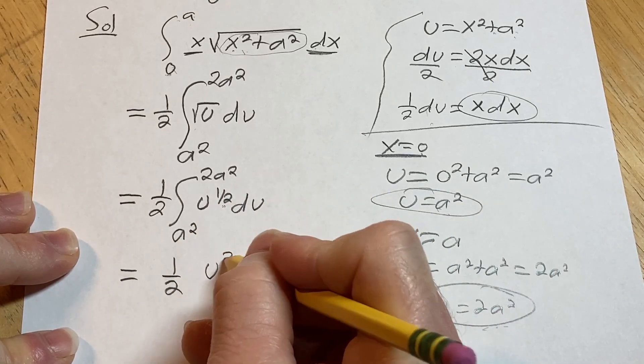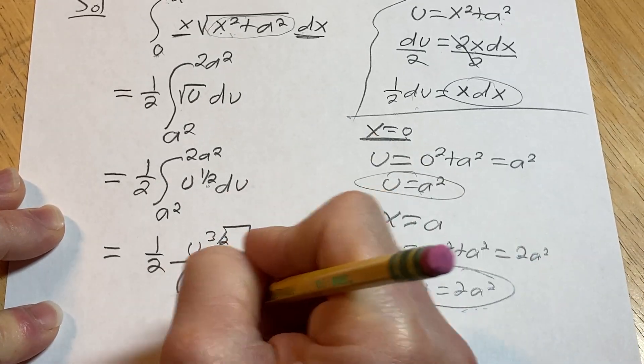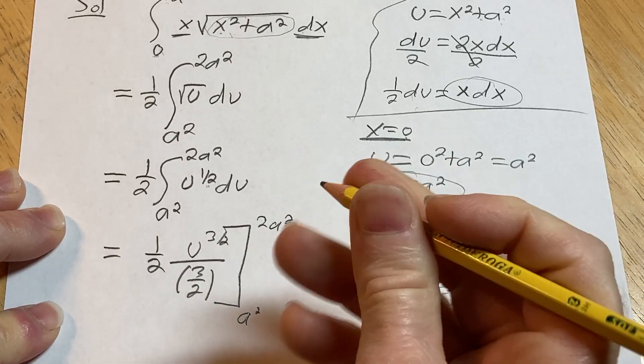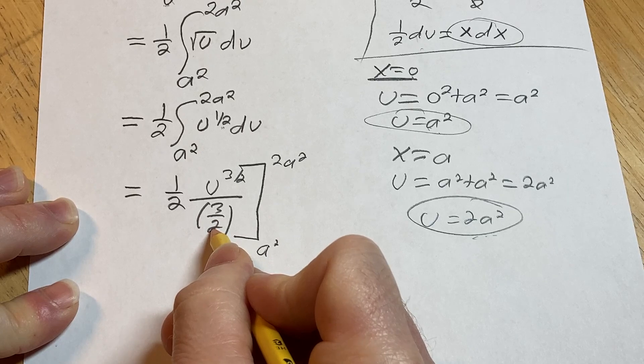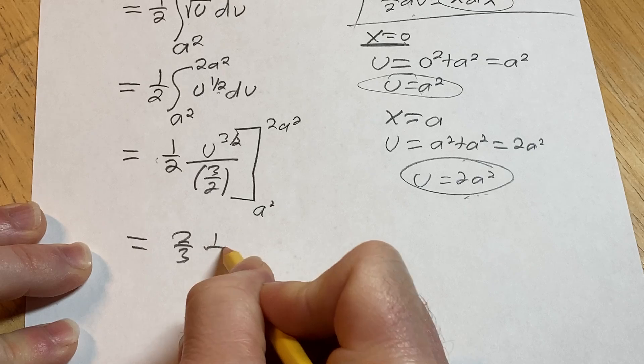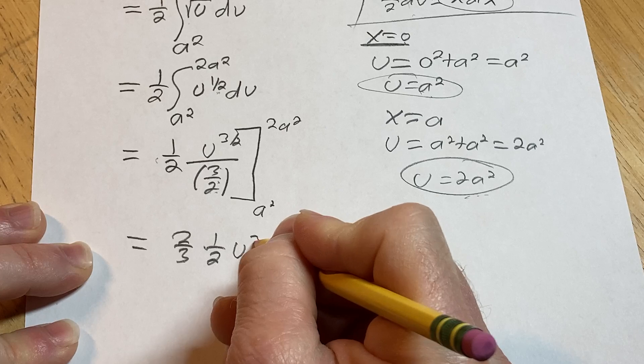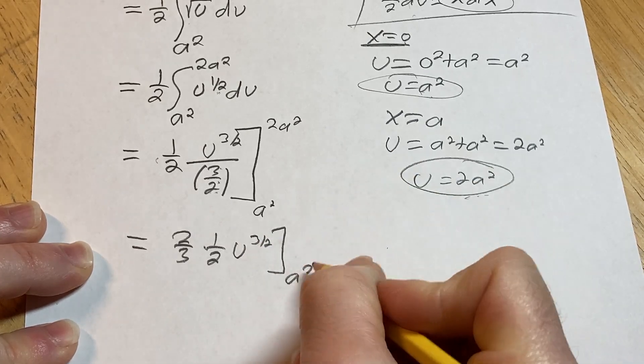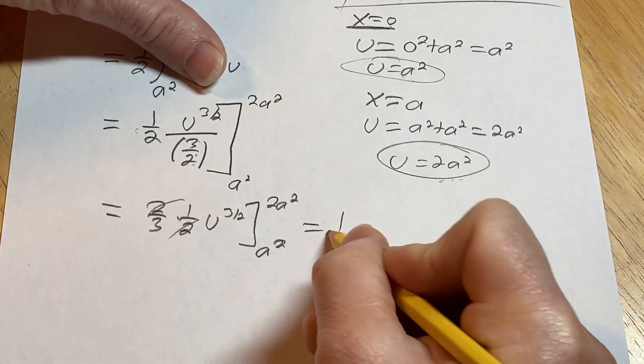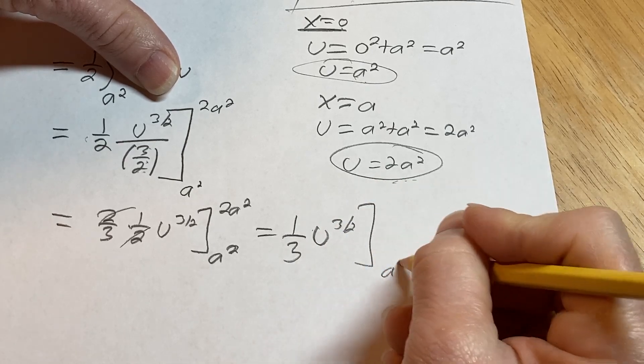So this is equal to 1 half. It's going to be u to the 3 halves. Then you divide by the result, 3 halves. I'm going from a squared to 2a squared. So here we can multiply by the reciprocal. So it's going to be 2 thirds times 1 half. Because when you divide by 3 halves, you really multiply by 2 thirds. u to the 3 halves, a squared to 2a squared. These cancel, so this is equal to 1 third, u to the 3 halves.